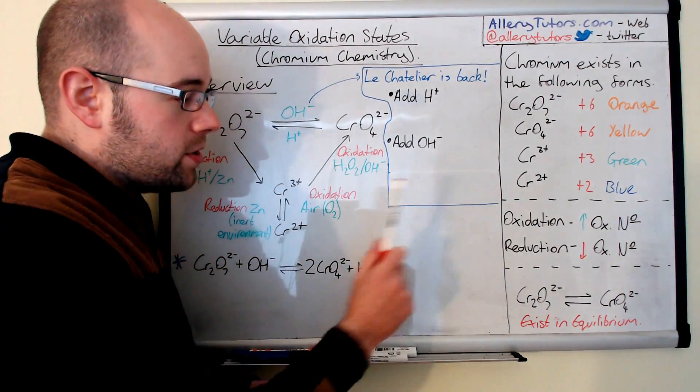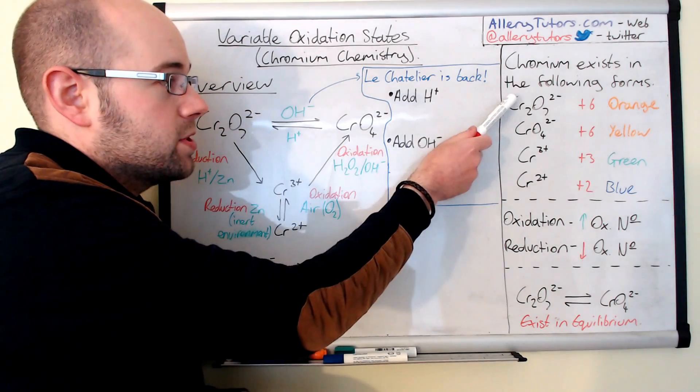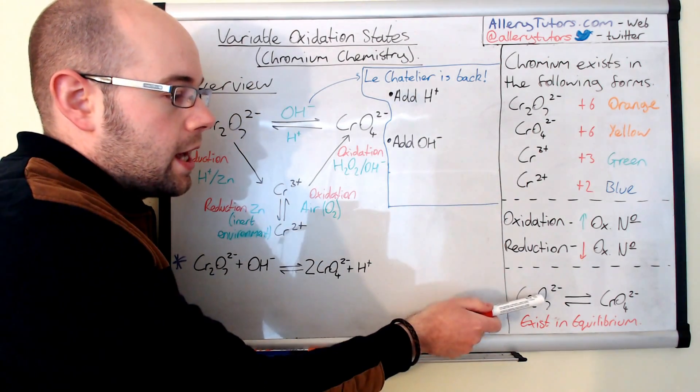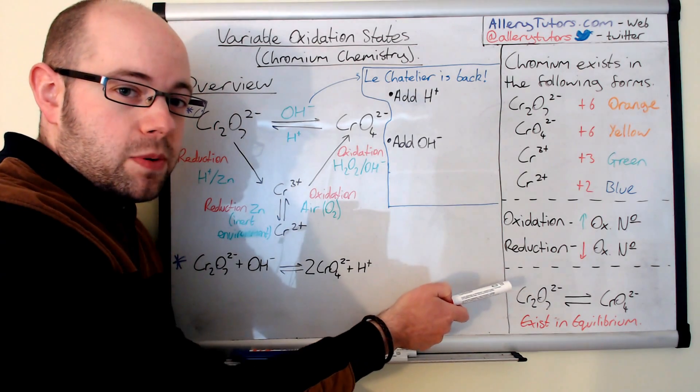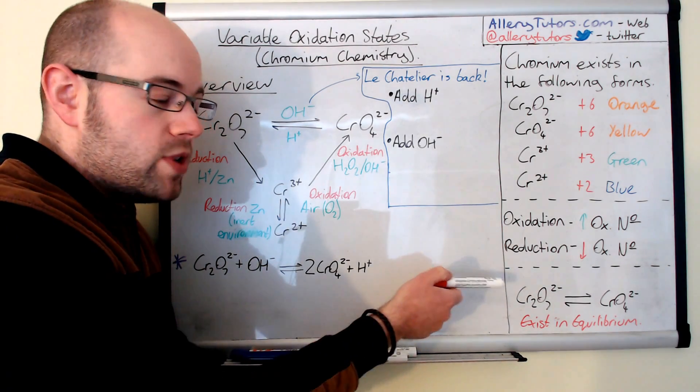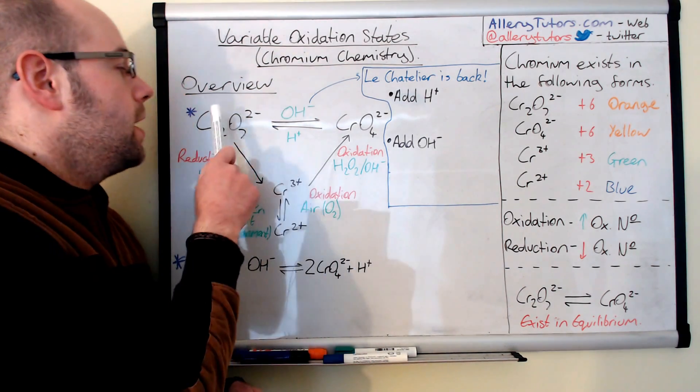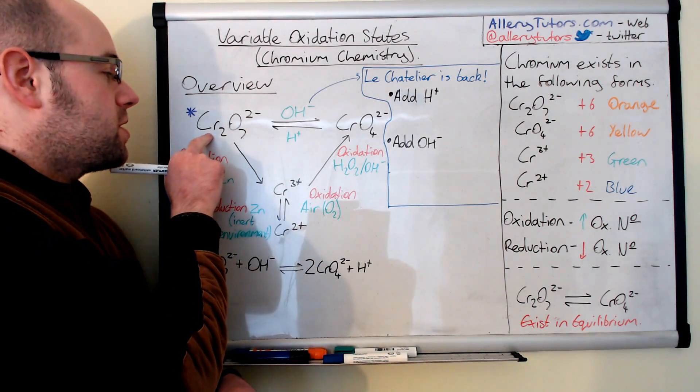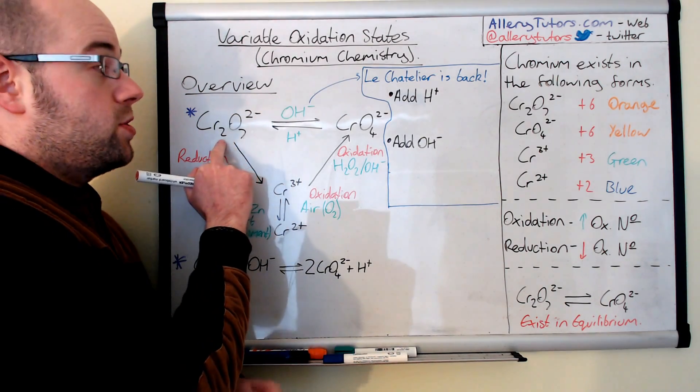So the first thing we're going to point out really is that these two, which are the dichromate and the chromate, these two actually exist in equilibrium naturally. So there's no redox reaction occurring here. I'm just going to show you up here. You can see we've got dichromate here and this is the orange colour.